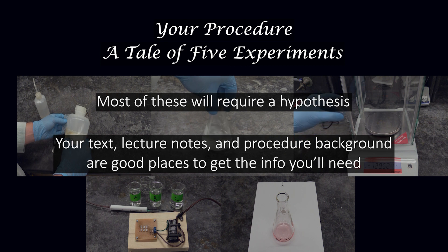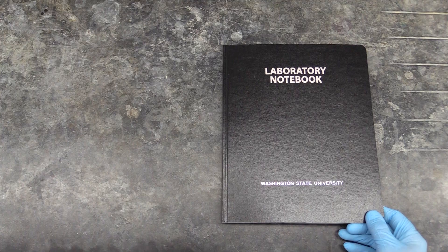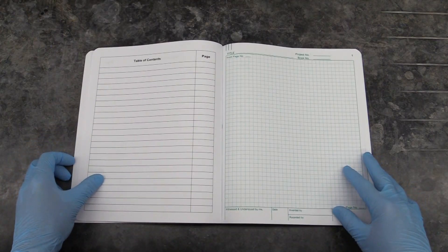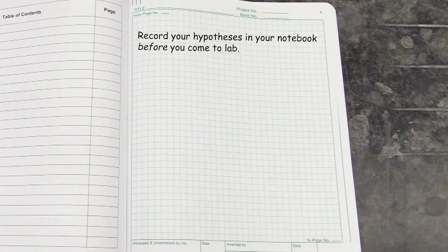Some of the info you'll need to do this is in the experiment background, and some is in your textbook and lecture notes. After you've learned what you can about the things you'll study in this experiment, you will make your hypotheses, note the plural, there'll be a few of them, in your lab notebook. And you'll need to do it before you come to lab.